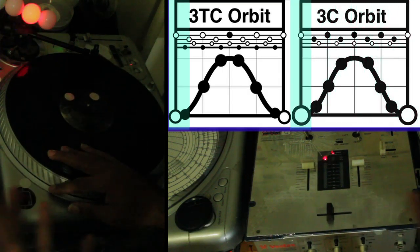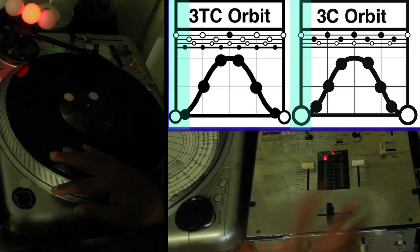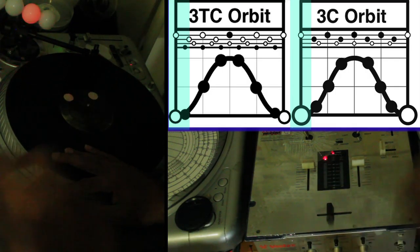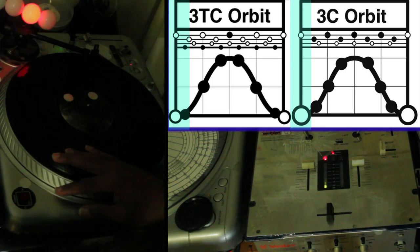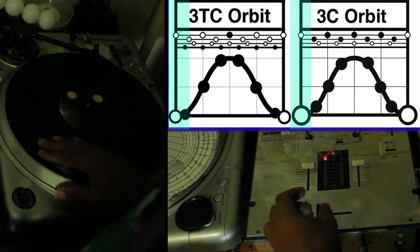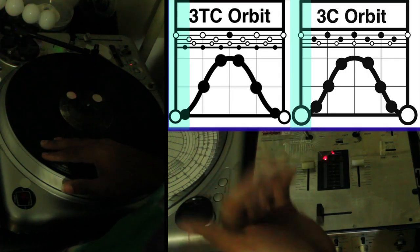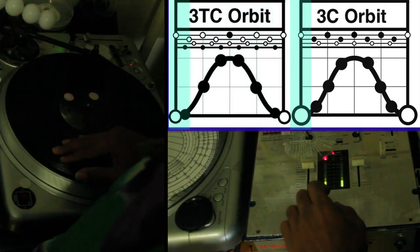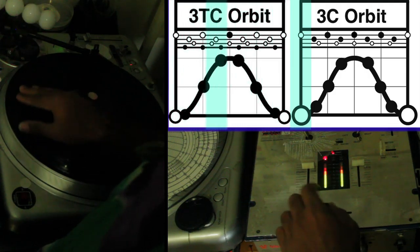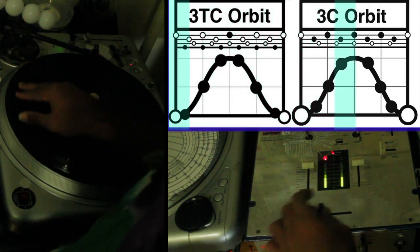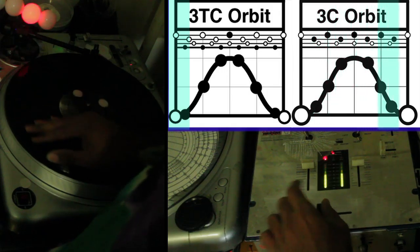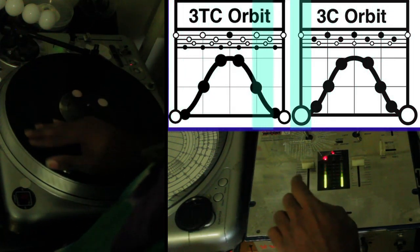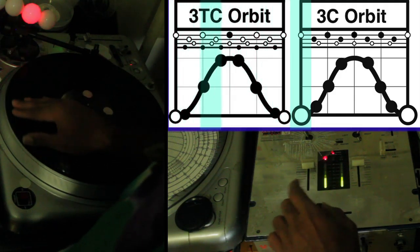Now we're going to get into hybridizing those. I'm going to go back and forth at first — just doing the triplet three-click and then the regular three-click. And then I'm going to try to hybrid those. So now we're going to do triplet three clicks, and then regular three clicks, going back and forth.